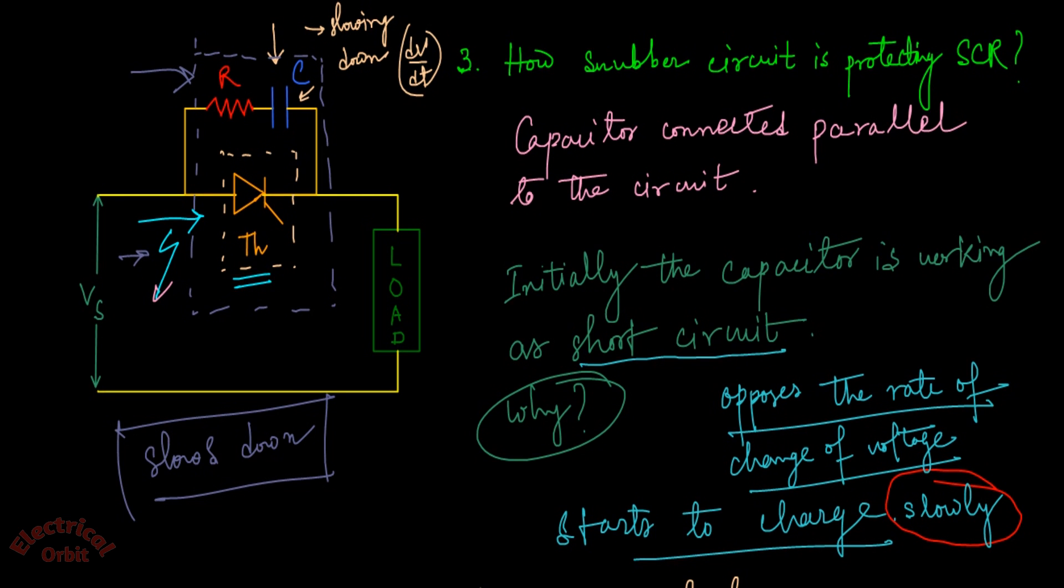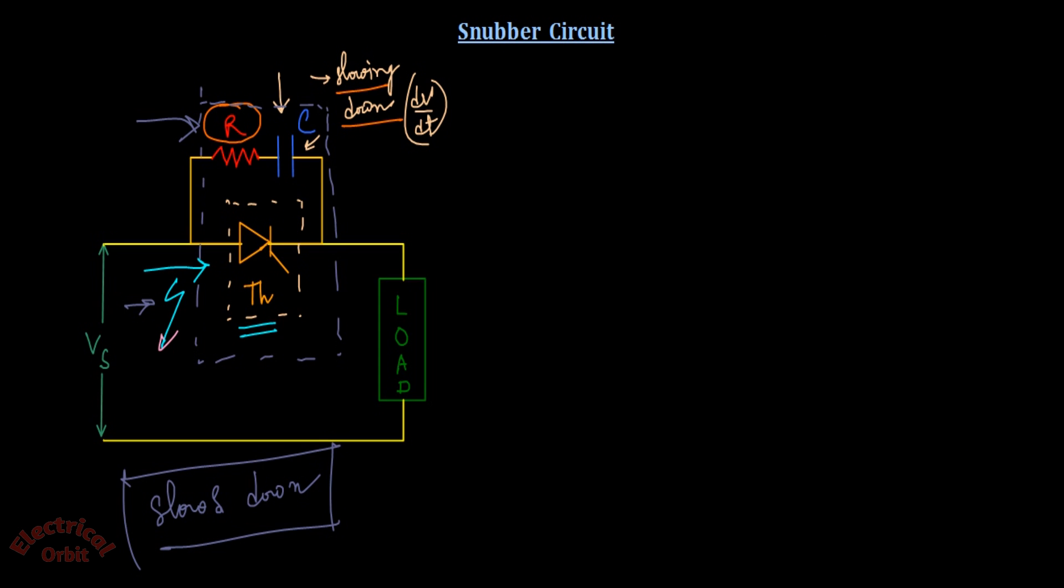Clear? Now your next question will be: if the capacitor is doing all the work of slowing down the rate of dv/dt and charging itself, then what is the function of this resistance?